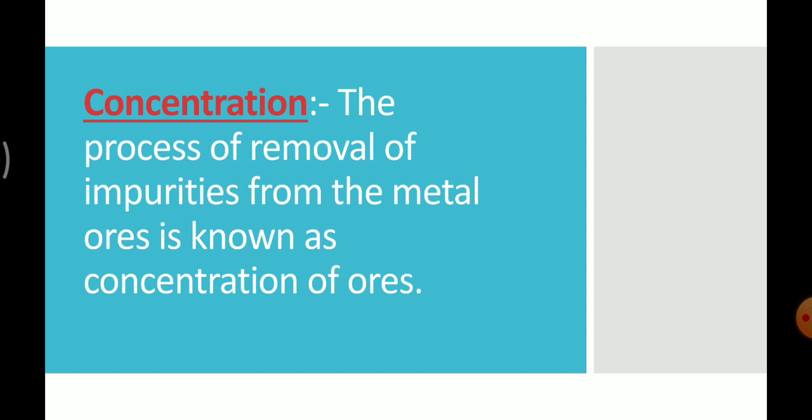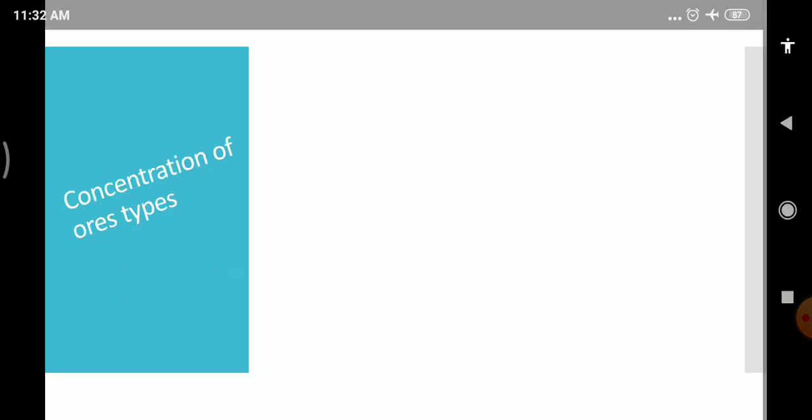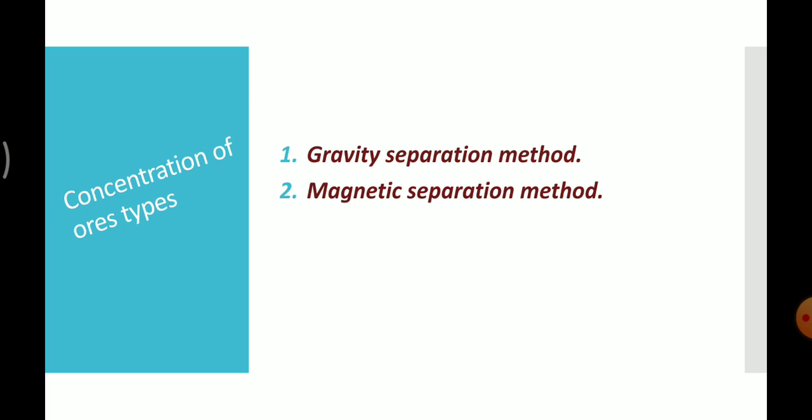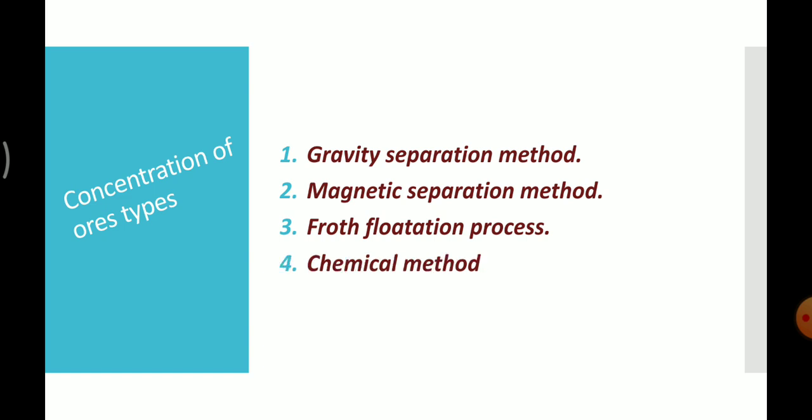There are four important methods used to concentrate the metal ores. First, gravity separation method, nothing but hydraulic washing — this method is based on gravity properties. Second, magnetic separation method — based on magnetic property. Third, froth flotation process — based on wetting properties. Fourth, chemical method. These are the four important methods to remove unwanted impurities and foreign materials present in a metal ore.